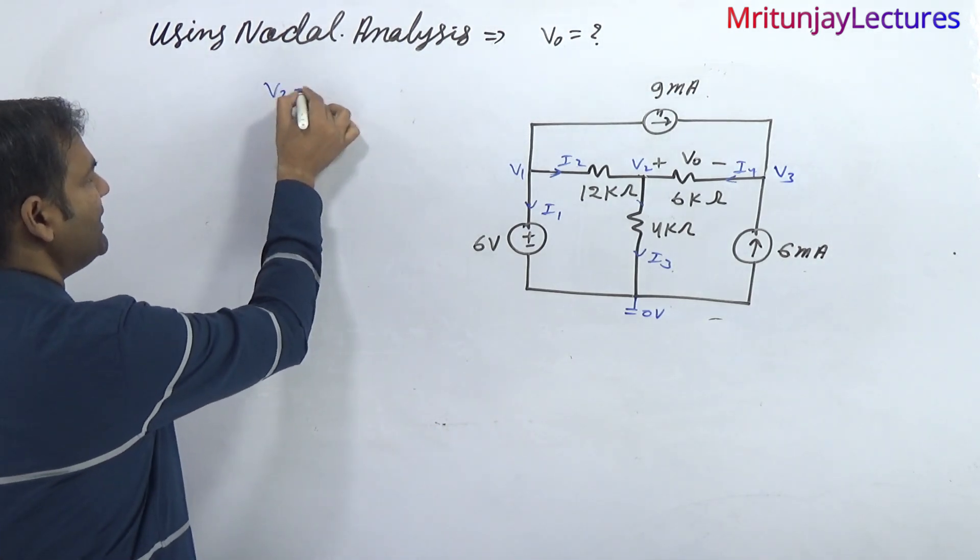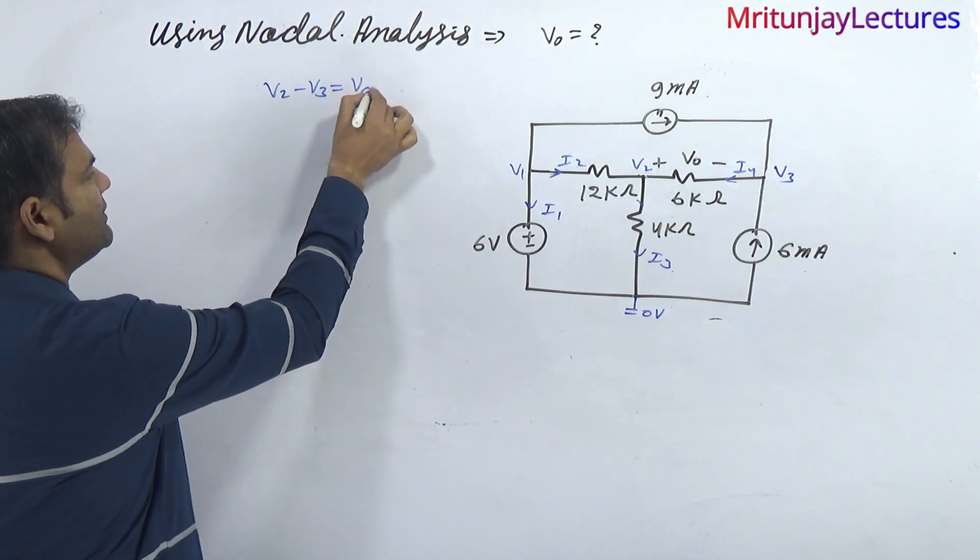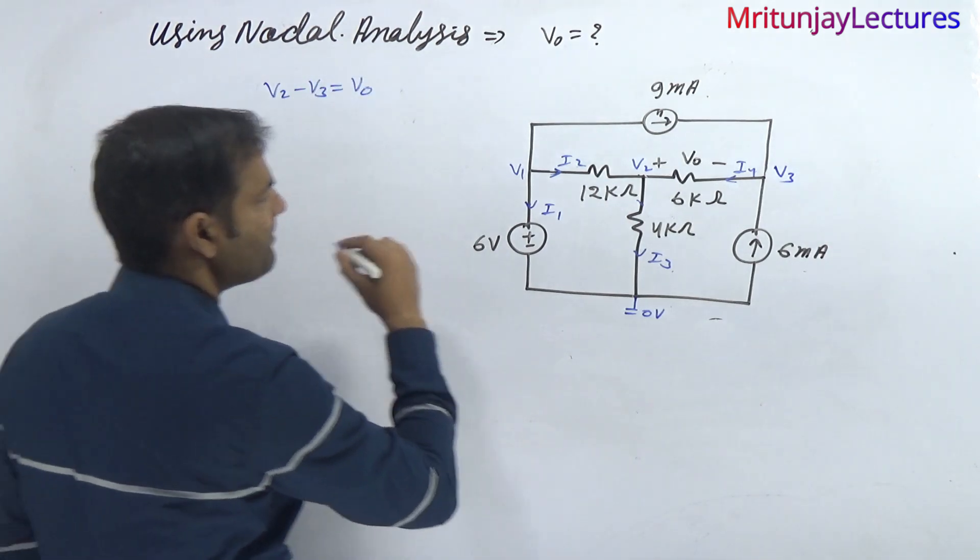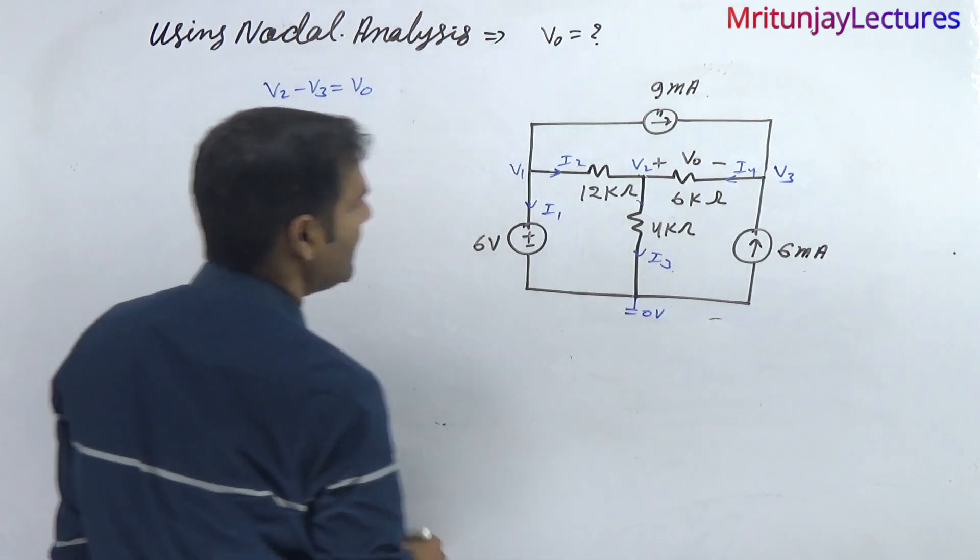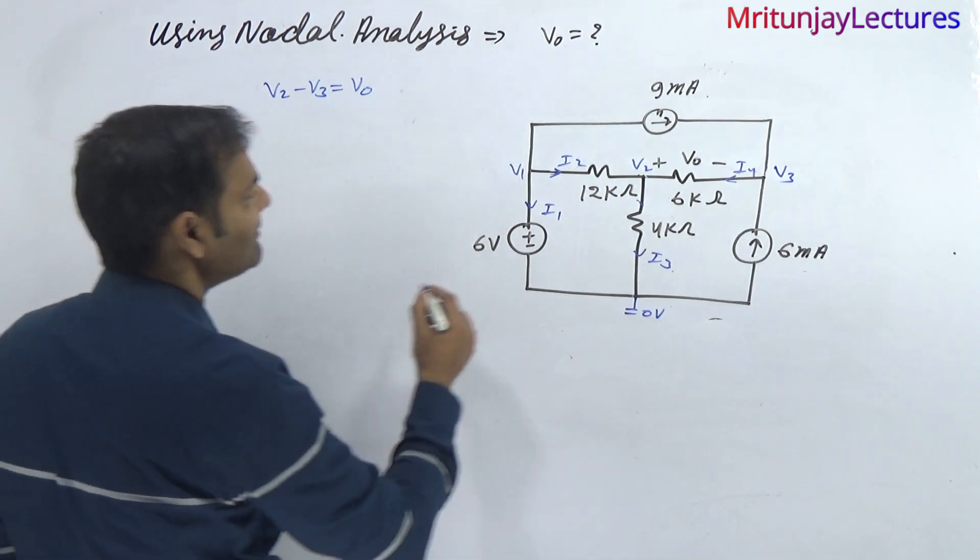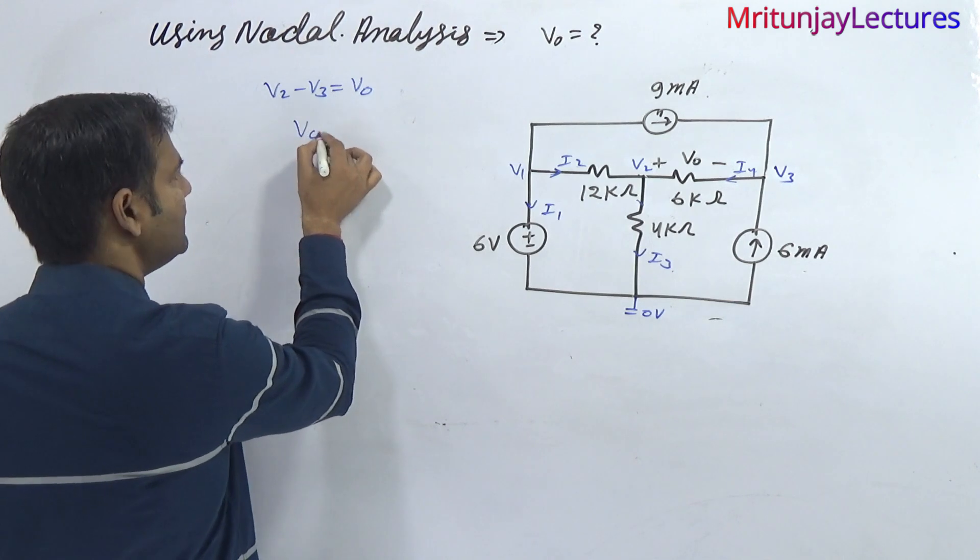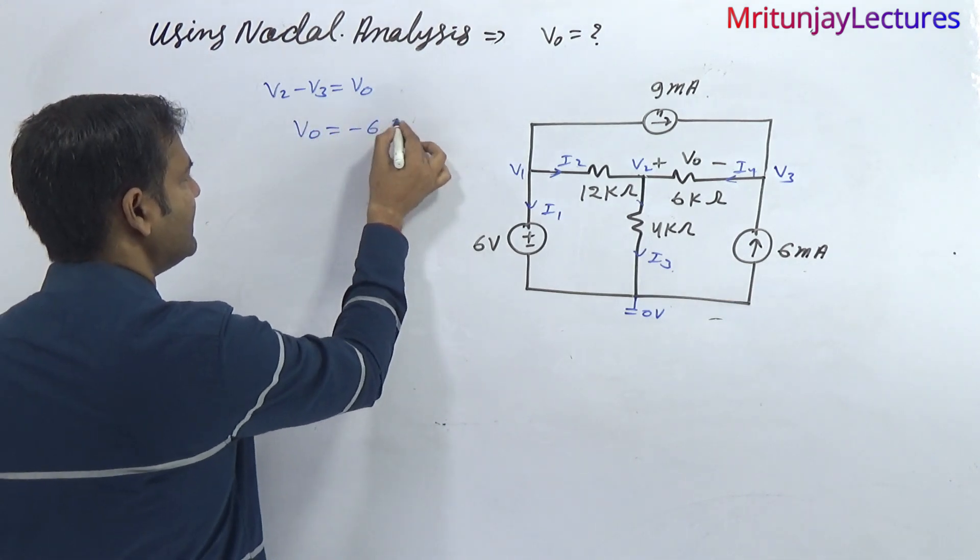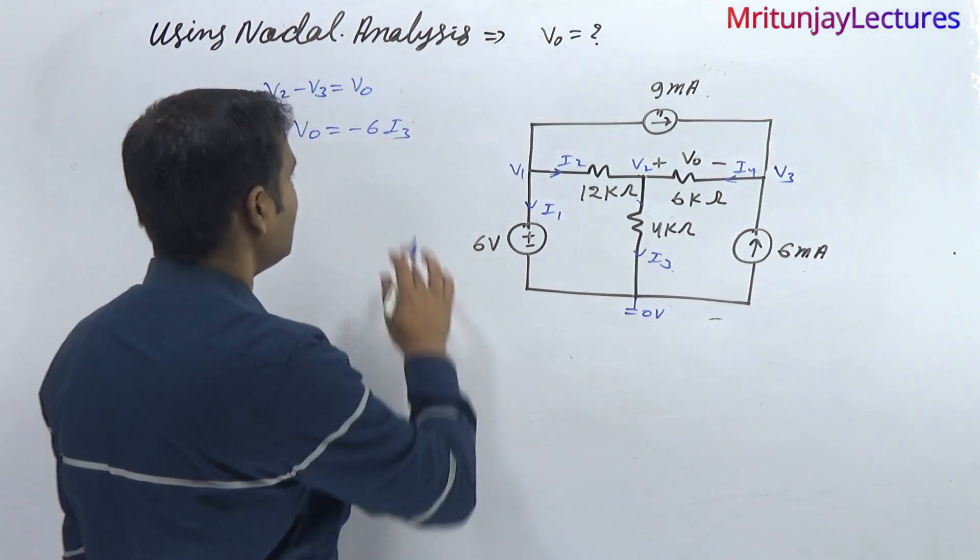V naught means V2 minus V3. This equals V naught. V naught also means minus 6 times I3... sorry, I4.